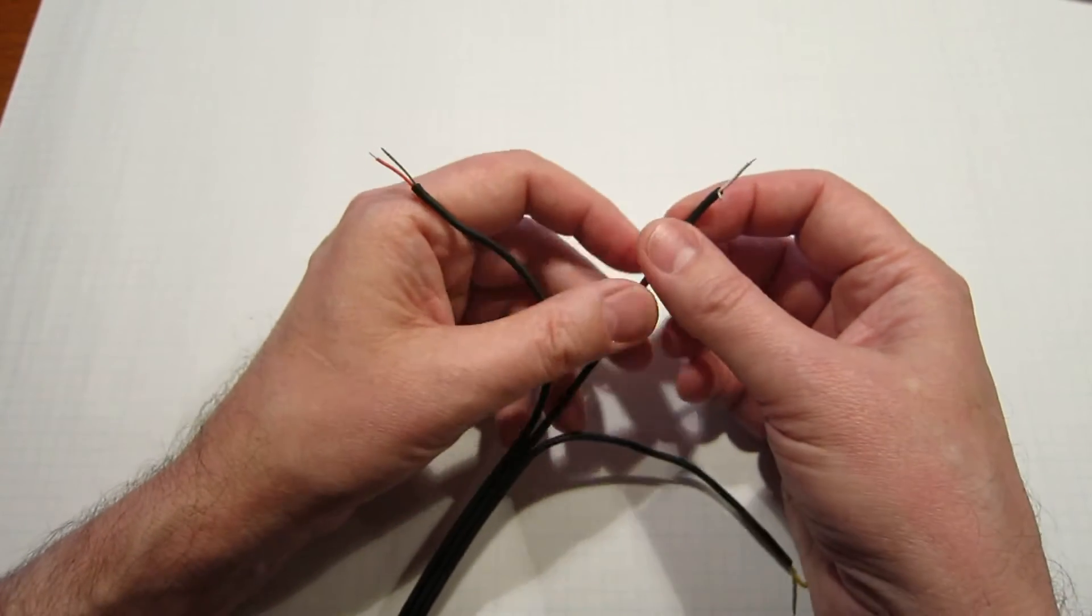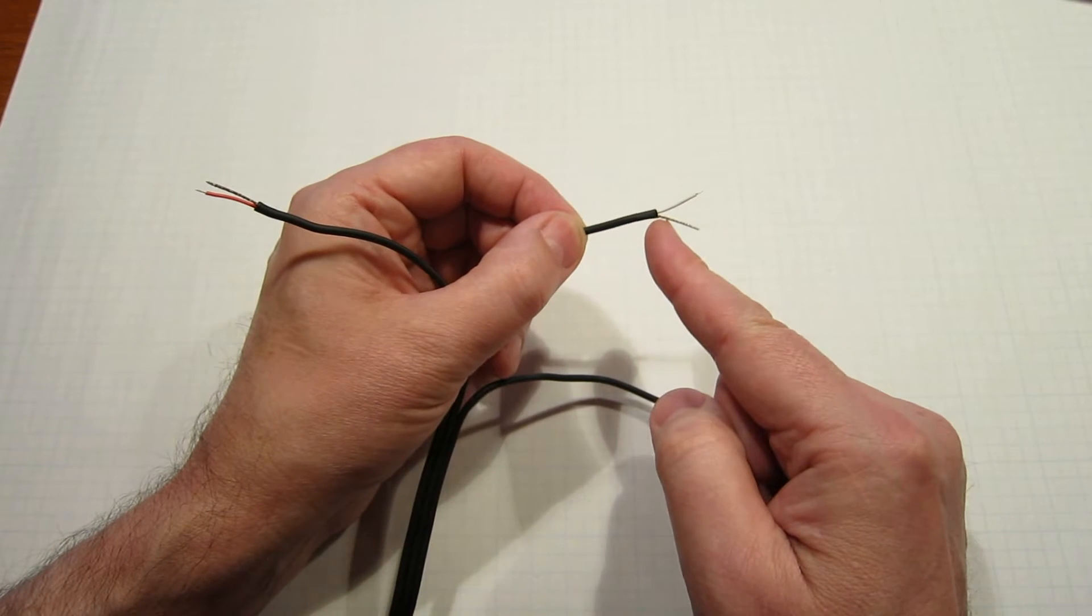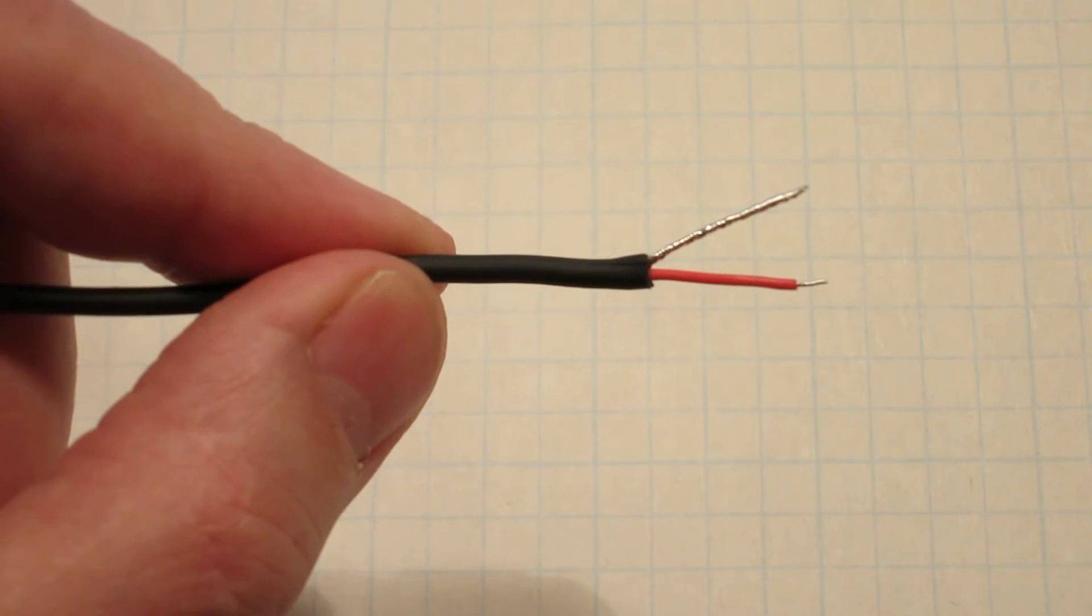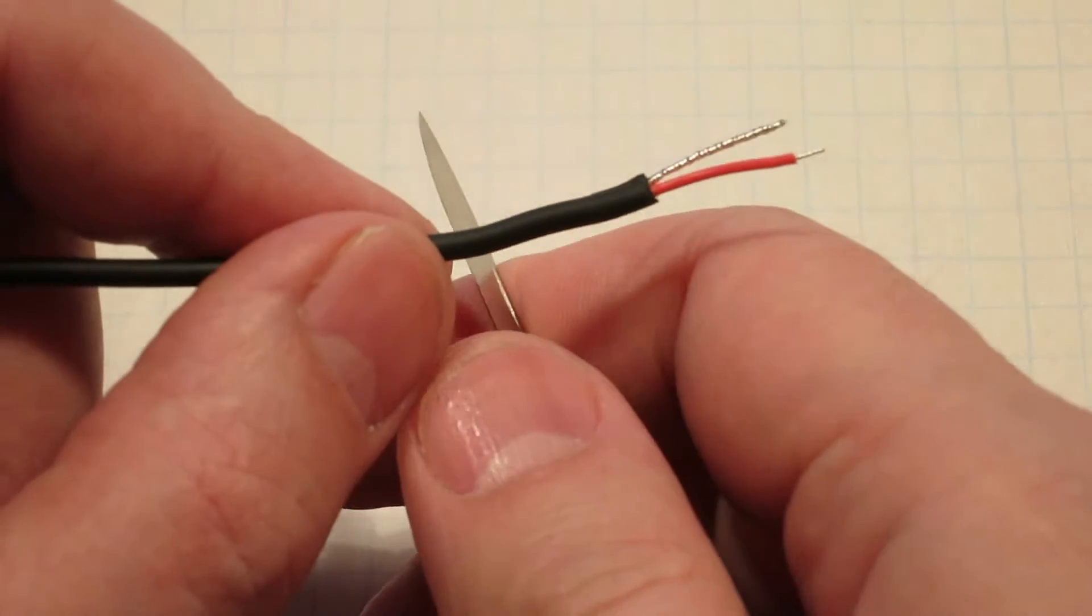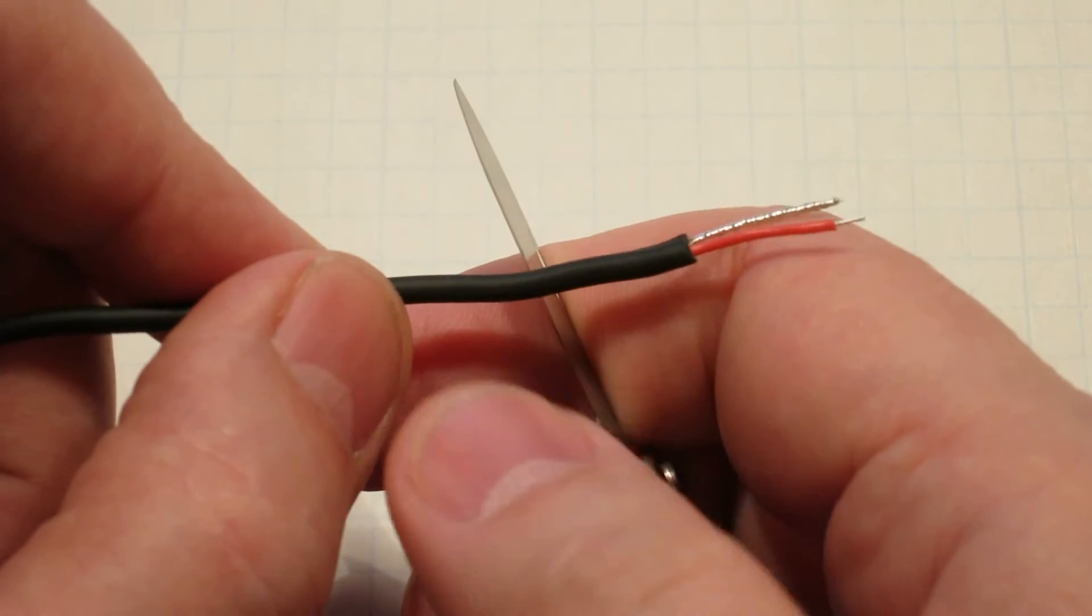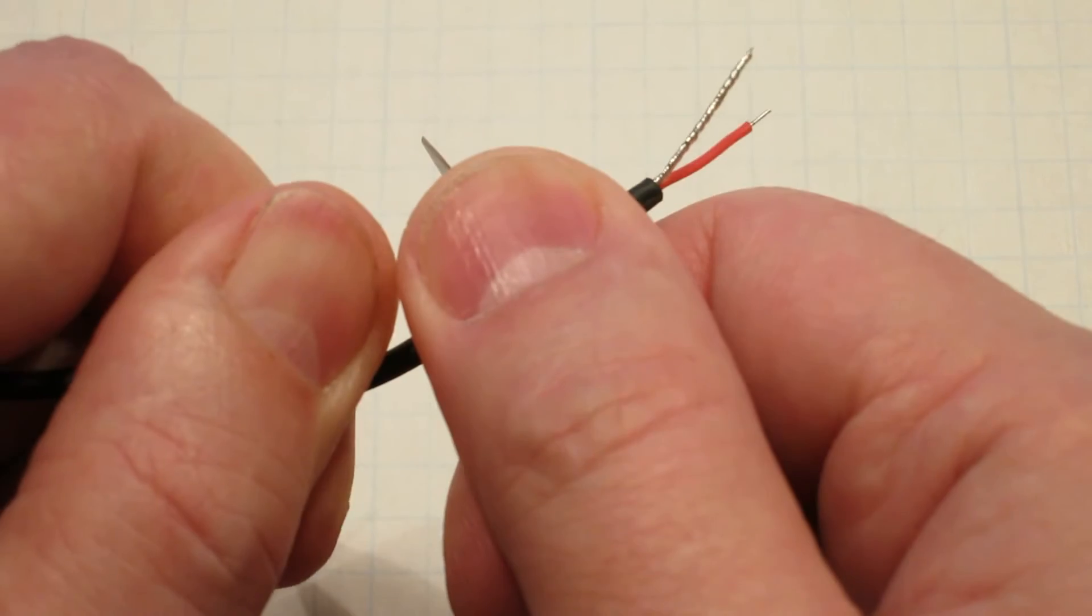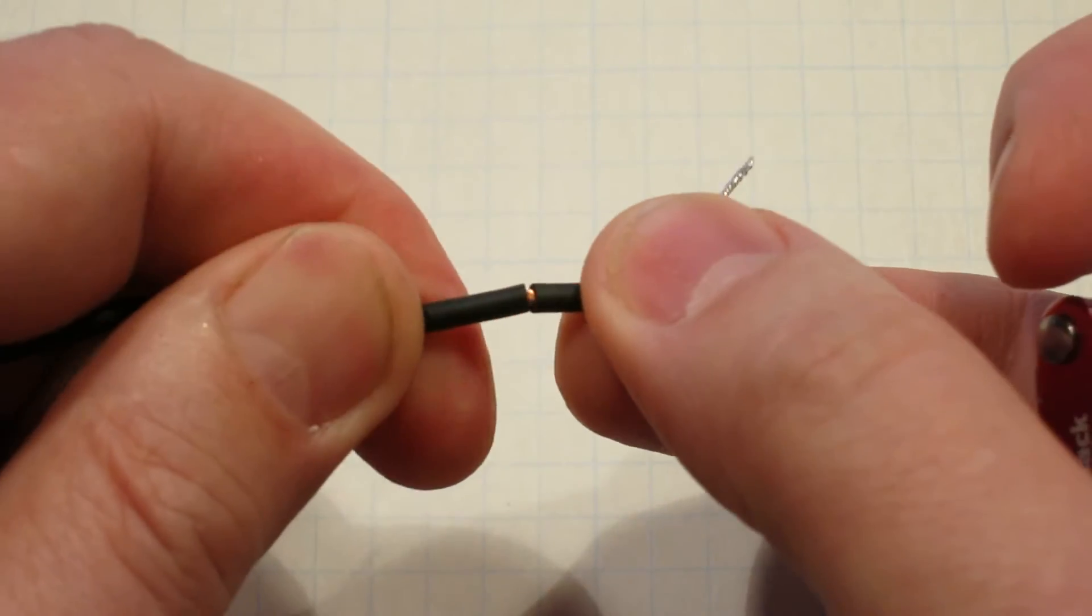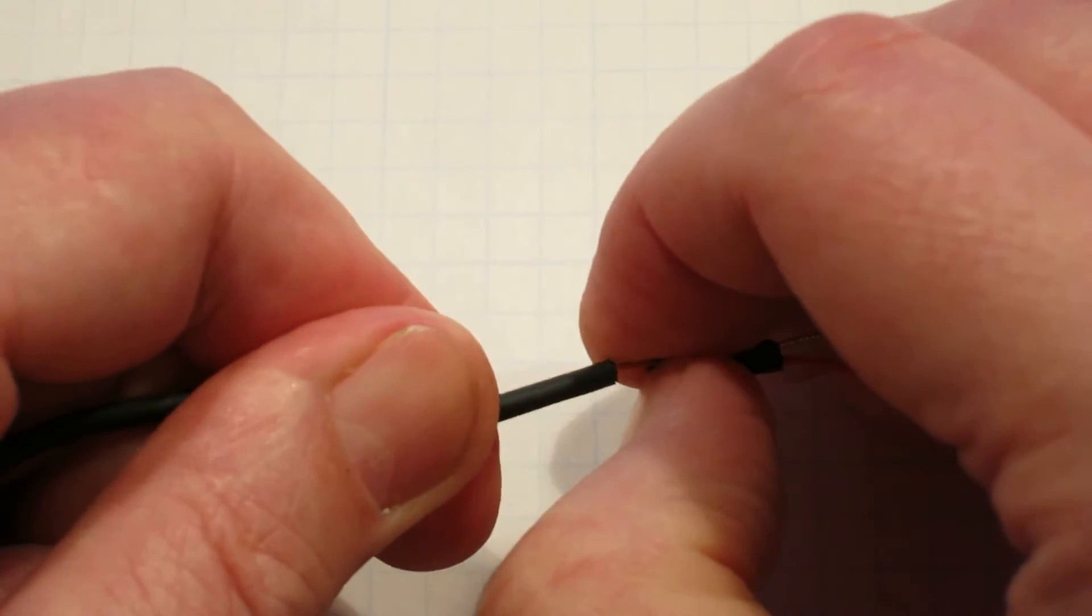Now we need to remove some of the black insulation so that we have a little more room here. I'm going to remove about an inch of this by just taking a knife and rolling the wire and creating a nick in it. Then you can just pull this black insulation off.